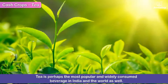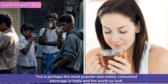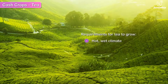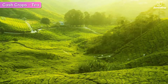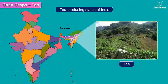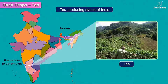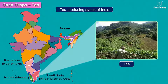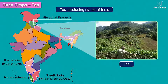Tea is perhaps the most popular and widely consumed beverage in India and the world as well. The tea crop needs a hot and wet climate and ample rainfall. We therefore notice a lot of tea plantations in Assam, Karnataka, Kudremukh, Kerala — Munnar, Tamil Nadu — Nilgiri District and Ooty — and Himachal Pradesh.